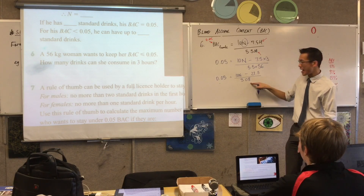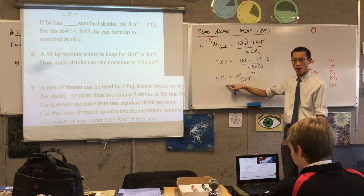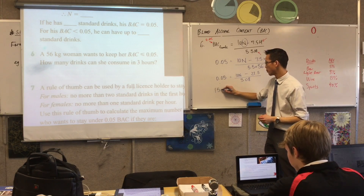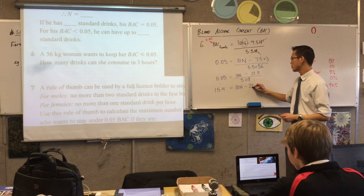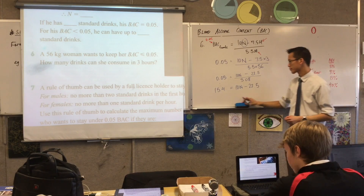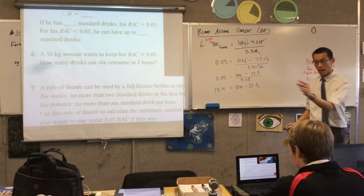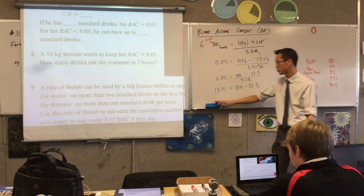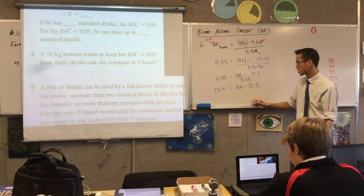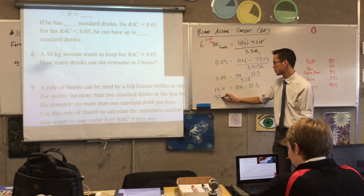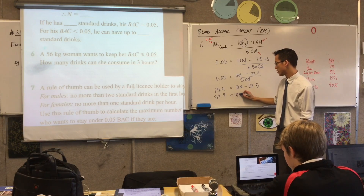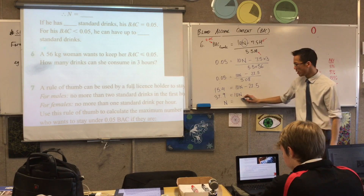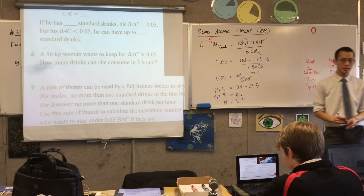I'll multiply both sides by 308. 308 times 0.05 is 15.4. Now what do I do? I could divide or I could add, but adding will be better to avoid decimals for as long as possible. So I'll add 22.5 to both sides, which gives me 37.9. Last step — I'm ready to divide, so putting N on the left-hand side gives me N = 3.79.